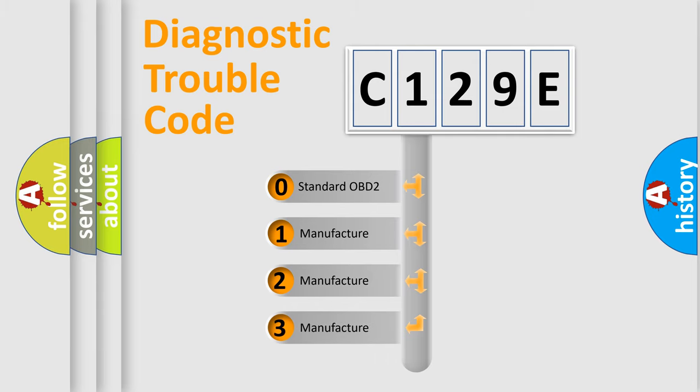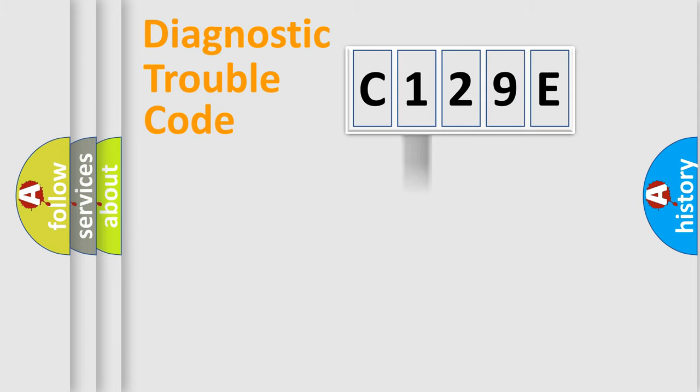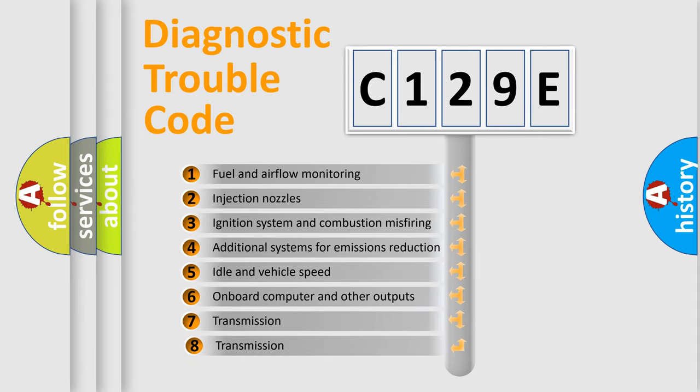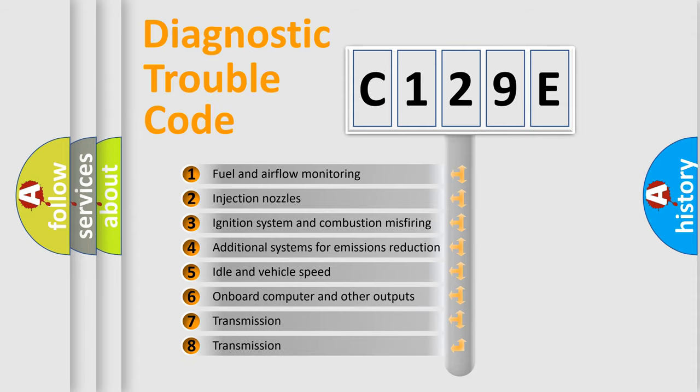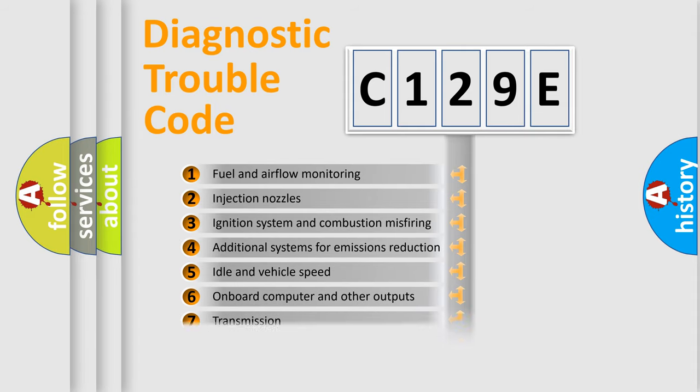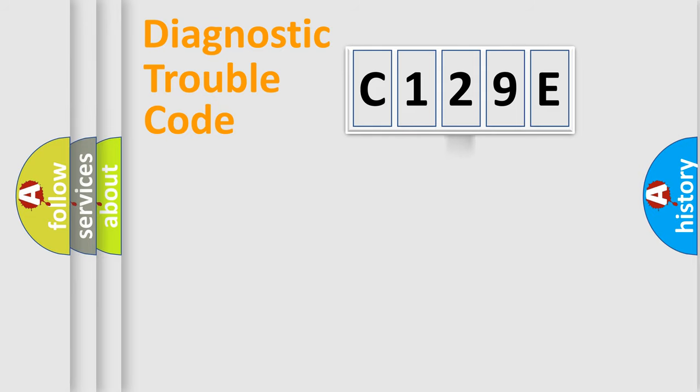If the second character is expressed as zero, it is a standardized error. In the case of numbers 1, 2, or 3, it is a manufacturer-specific expression of the car-specific error. The third character specifies a subset of errors. The distribution shown is valid only for the standardized DTC code.